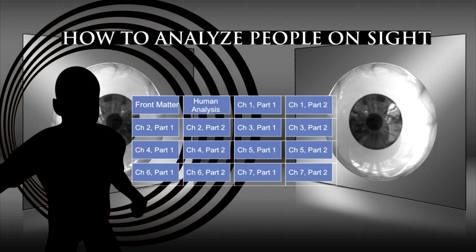Part 1 of Chapter 1 of How to Analyze People on Sight. This is a LibriVox recording. All LibriVox recordings are in the public domain. For more information or to volunteer, please visit LibriVox.org. Recording by Stephanie Lee. How to Analyze People on Sight Through the Science of Human Analysis: The Five Human Types by Elsie Lincoln Benedict and Ralph Payne Benedict. Part 1 of Chapter 1. The Alimentive Type — The Enjoyer. Note: bear in mind at the beginning of this and every other chapter that we are describing the extreme or unmixed type.